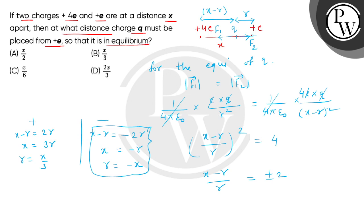So from +e charge, how much distance is where q we can place? That is x/3. So the correct answer is option B. Thank you.